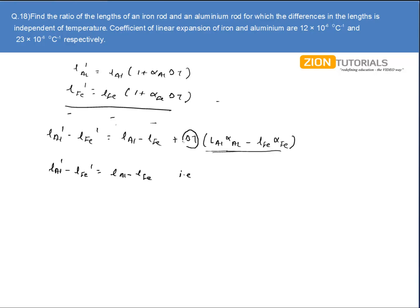No matter what the change in temperature is, if this is zero, then this overall term will be zero. So I can write, if the coefficient of ΔT equals zero, that is when L_Al × α_Al - L_Fe × α_Fe equals zero, then that condition will fulfill our requirement.